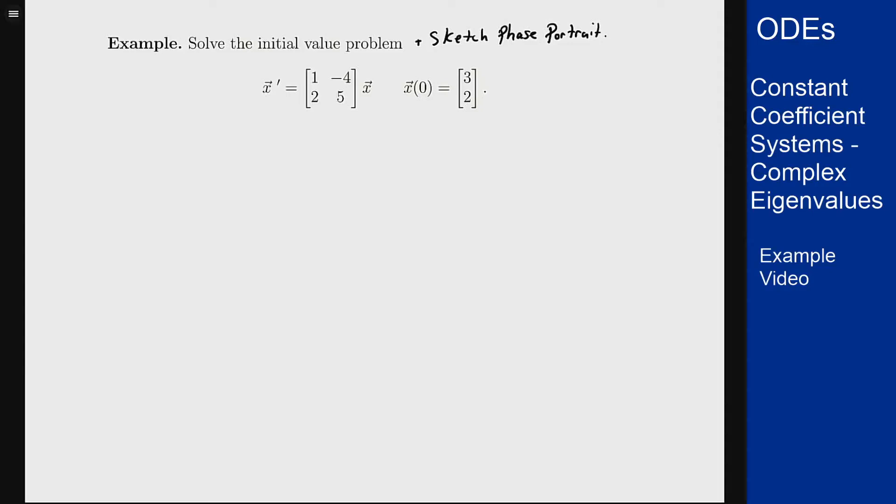In this example we want to solve the initial value problem x prime is the matrix [1, -4; 2, 5] times x, where x(0) is [3, 2], as well as sketch a phase portrait for this system.